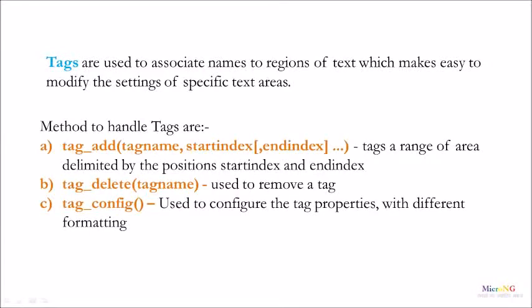We have three different methods to handle tags. The first is tag_add, which is used to give a tag name to a particular region of text. We have to mention the starting and ending index and a particular tag name. tag_add tags a range of area delimited by the start and ending index. Once the tag has been set, we can remove it by calling tag_delete, where we mention the tag name to be removed. The third method, tag_config, is used to configure various properties for the tag, such as changing background colors and different font styles for that particular tag region.